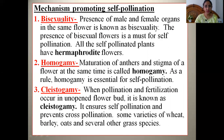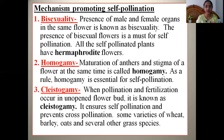The first mechanism that promotes self-pollination is bisexuality — the presence of male and female organs in the same flower. The presence of a bisexual flower is a must for bisexuality to occur. Such a flower has androecium, gynoecium, stamens, carpels, ovaries, sepals, and petals, all in perfect functional condition. This is the first mechanism that promotes self-pollination.